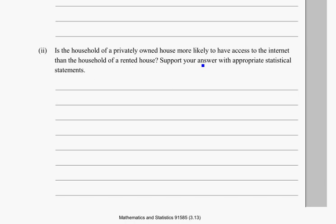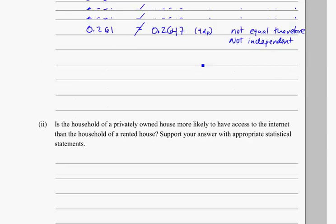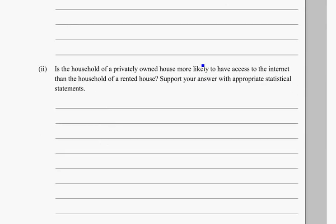Taking a look at the second part of that question. Again, we're dealing with owned houses and access to the internet. Is the household of a privately owned house more likely to have access to the internet than a household that's rented? So support it with significant statements.